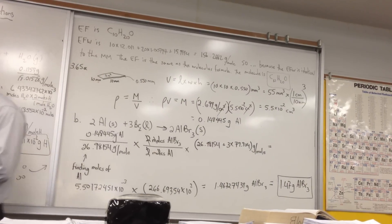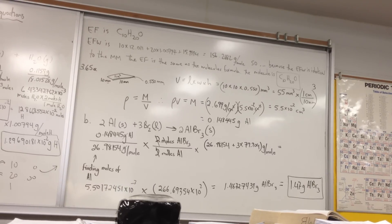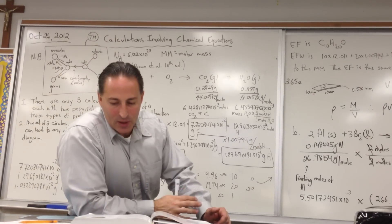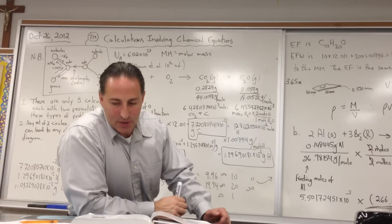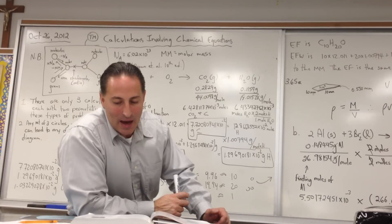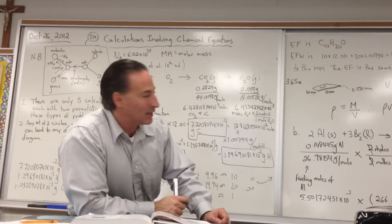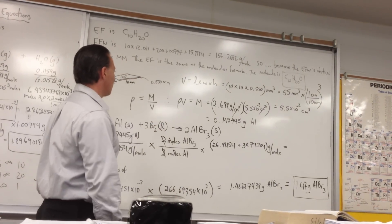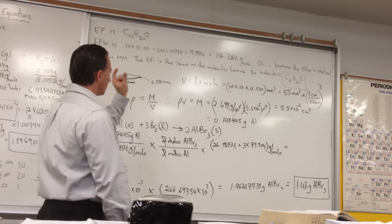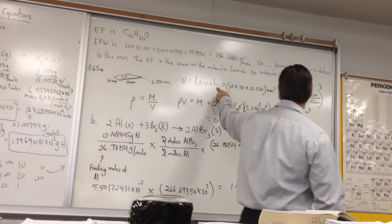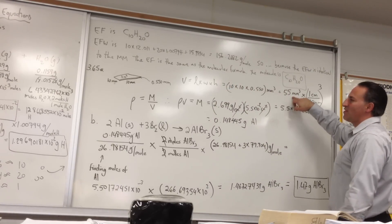The next problem: a piece of aluminum foil 1 cm square and 0.55 mm thick is allowed to react with bromine to form aluminum bromide. This is from your textbook, Brown and others, page 115, problem number 365. Part A asks how many moles of aluminum were used — the density of aluminum is 2.699 g/cm³. We convert everything to millimeters: 1 cm × 1 cm becomes 10 mm × 10 mm. The volume is 10 × 10 × 0.55 = 55 mm³.